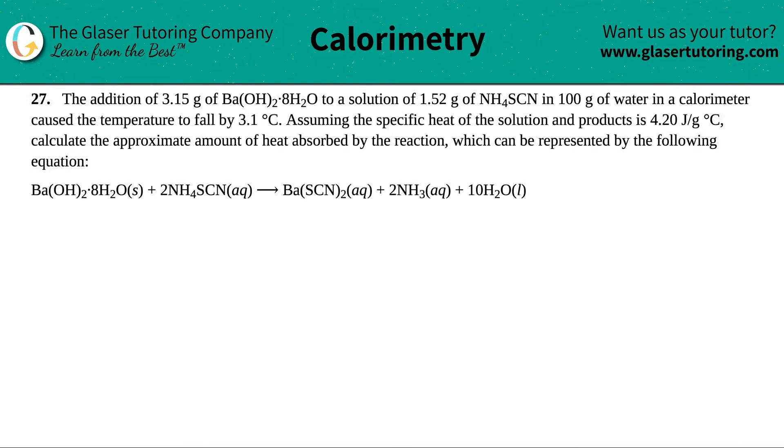Number 27: The addition of 3.15 grams of Ba(OH)2·8H2O to a solution of 1.52 grams of NH4SCN in 100 grams of water in a calorimeter caused the temperature to fall by 3.1 degrees Celsius. Assuming the specific heat of the solution and products is 4.20 joules per gram degree Celsius,